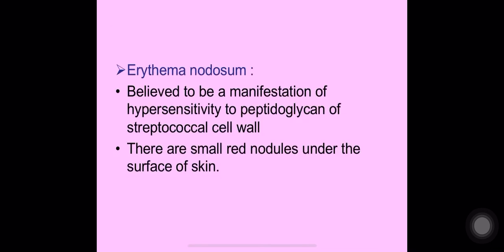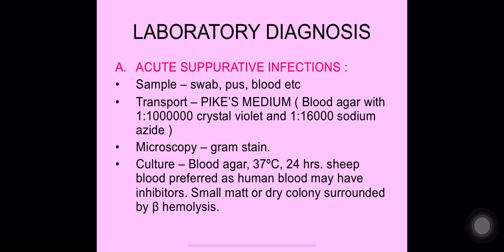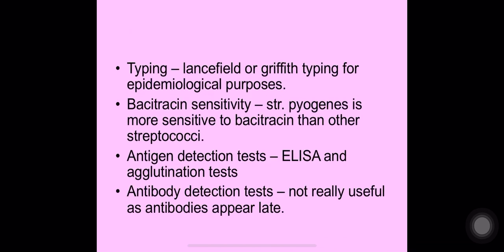Erythema nodosum is believed to be a hypersensitivity manifestation to peptidoglycan of the streptococcal cell wall, presenting as small red nodules under the skin surface. For lab diagnosis of Streptococcus pyogenes in acute suppurative infections, a sample is taken from the site of lesion — swab, pus, or blood. Pike's medium is used as a transport medium (blood agar with 1:200,000 crystal violet and 1:160,000 sodium azide). Gram stain shows gram-positive cocci in chains. Sheep blood agar is preferred for culture, showing small mat or dry colonies surrounded by beta hemolysis. Lancefield or Griffith typing can be done for epidemiological purposes.